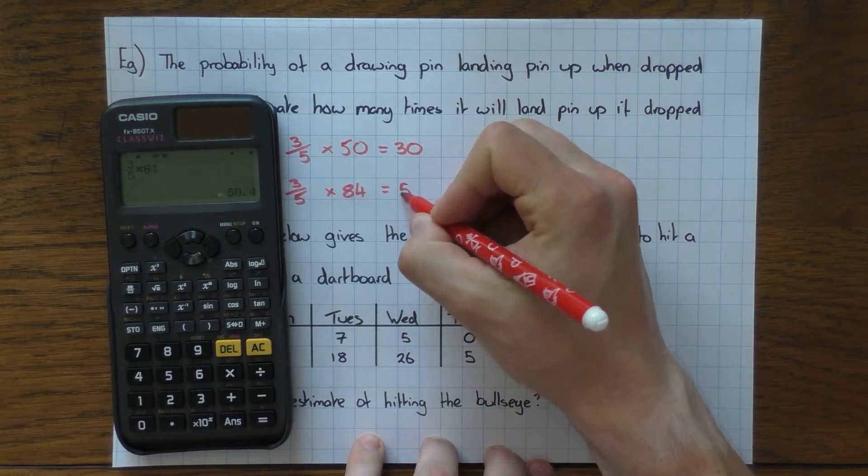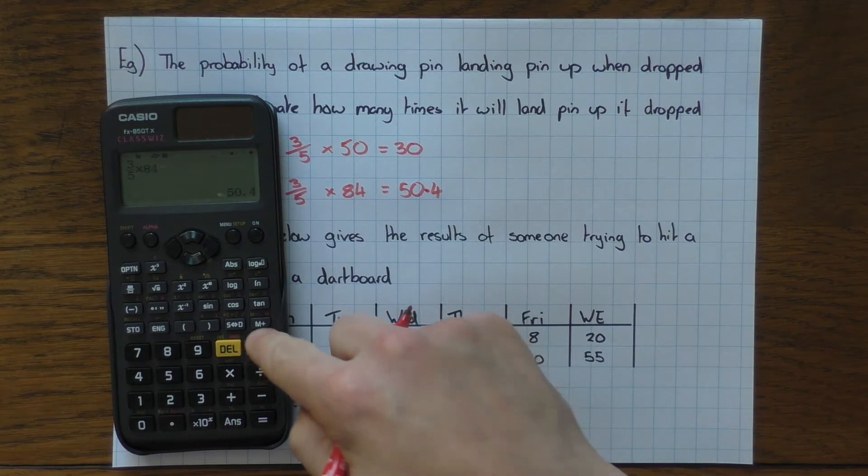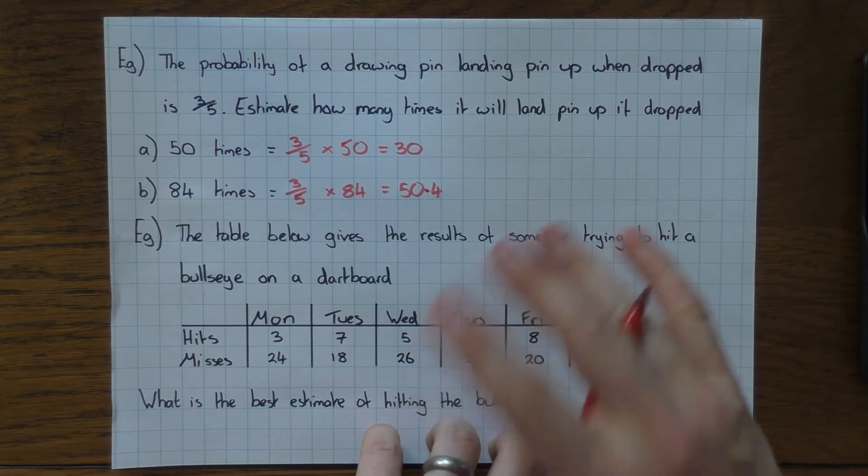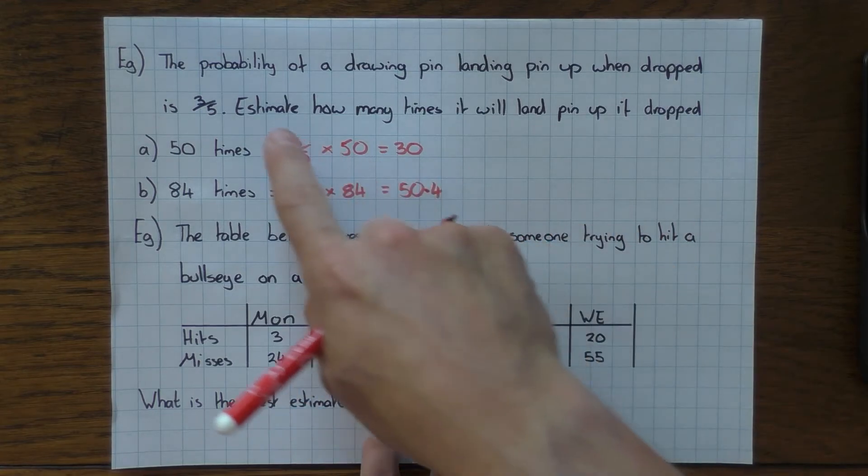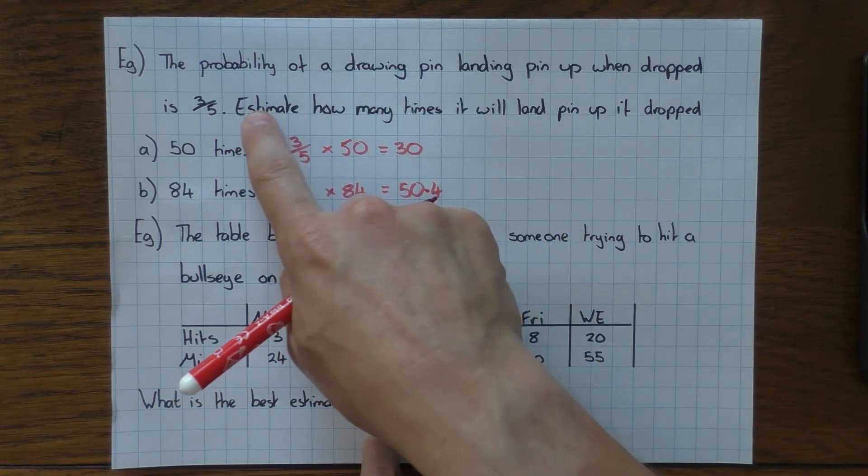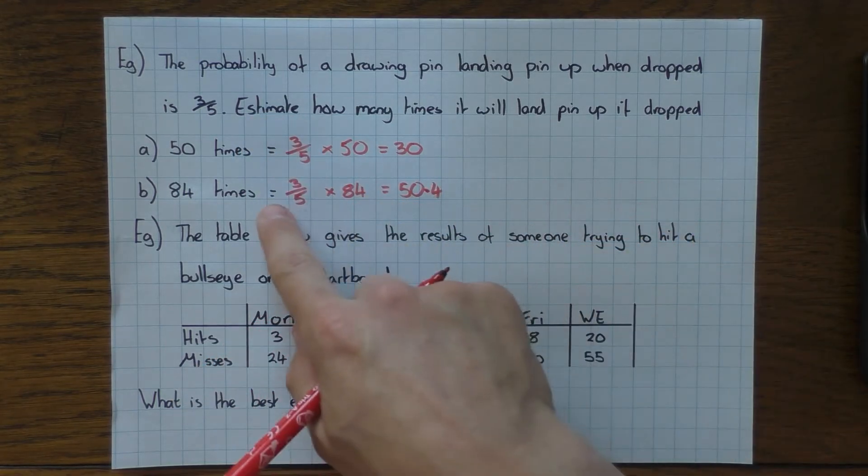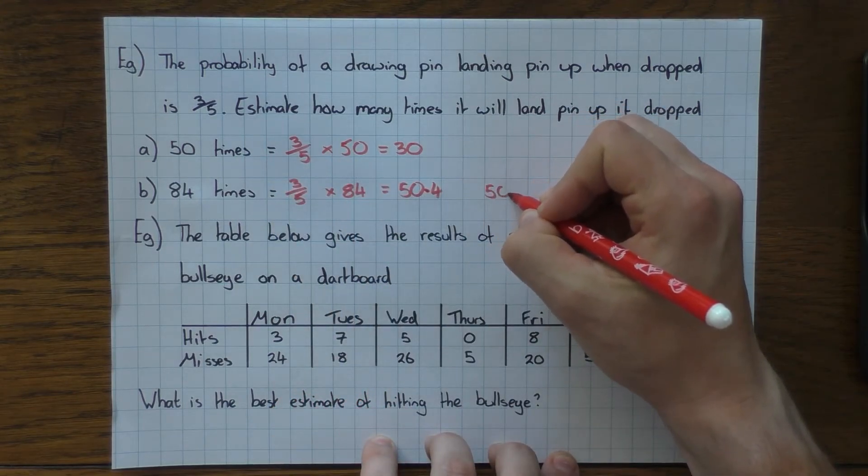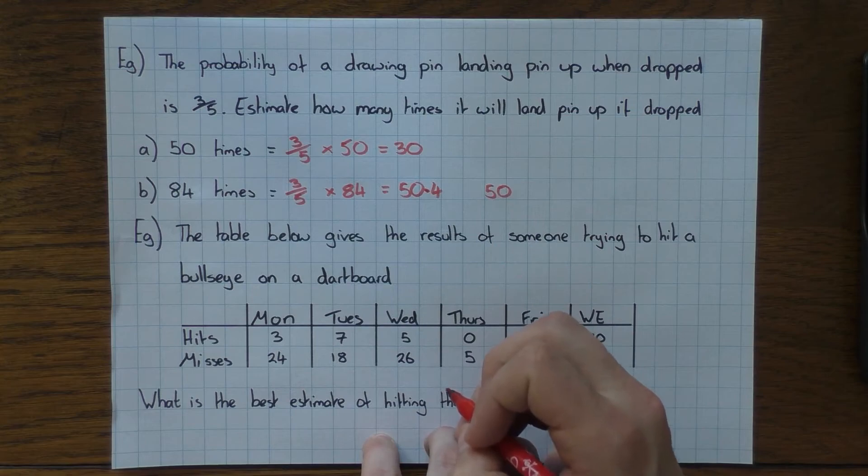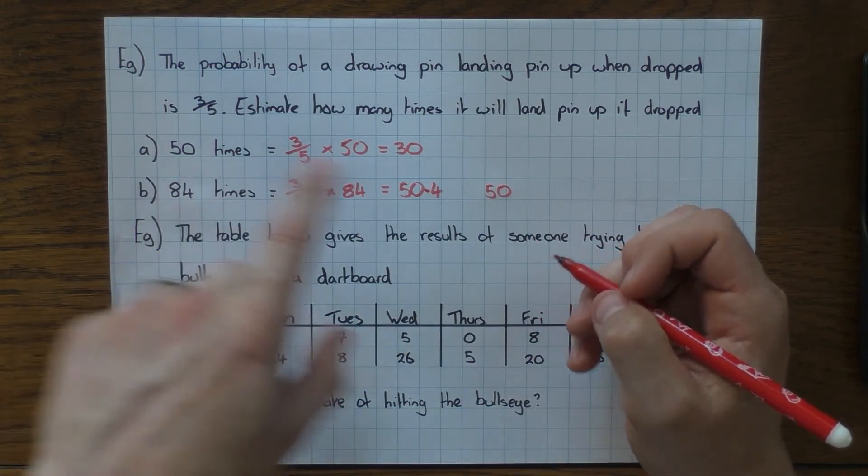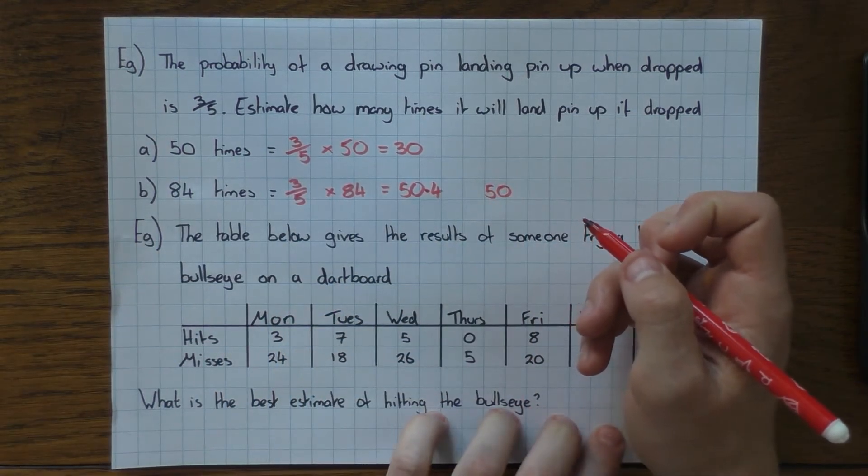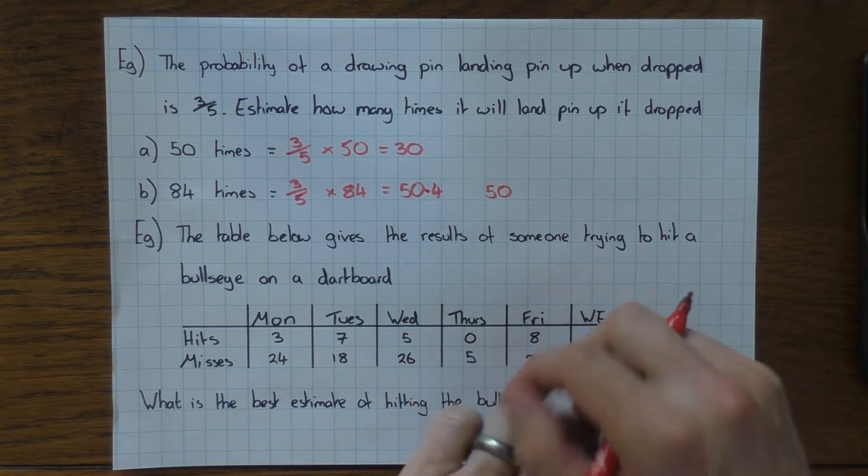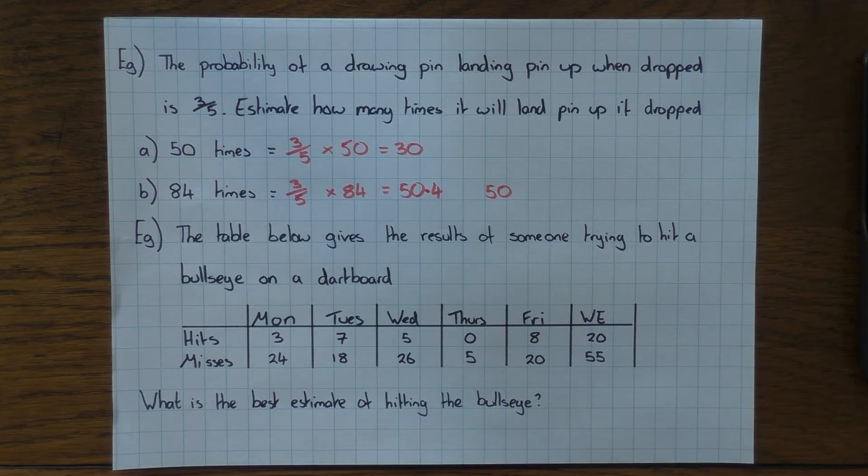Now of course you can't have 0.4 of a time where it lands pin up. It just doesn't work. So if you notice in the question it says estimate. So just have a good guess. As long as you've shown this working, you would then round it. In this case it would round down to 50. So in 84 times I'd expect to see it 50 times. So as it's an estimate, we can just do that, rounding it to the nearest whole number.